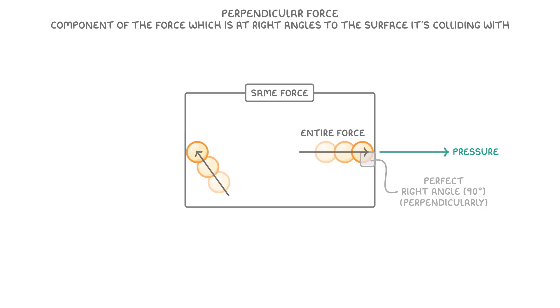In contrast, for this particle on the left, only a small component of its force would be perpendicular to the container, as we can see if we split its force into vertical and horizontal components. This means that it's only this much smaller force that would be used to create pressure.